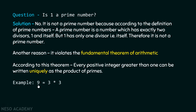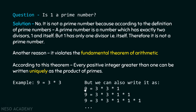For example, we can represent 9 as 3×3. The term 'uniquely' means that no matter what, we can represent 9 by 3×3 only — that is the only prime product of this number. But if we consider one as a prime number, then it should also represent this number uniquely. However, we can write 9 as 3×3×1, or 3×3×1×1, and so on. Therefore, as one violates the fundamental theorem of arithmetic, we can say that one is not a prime number.